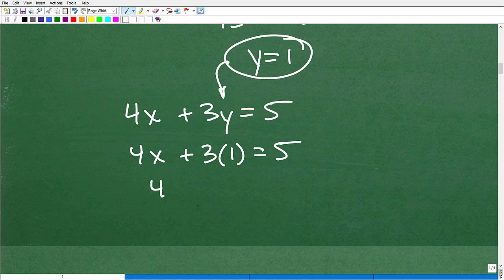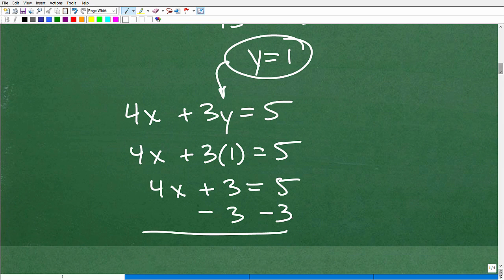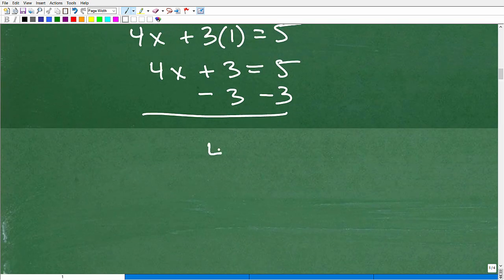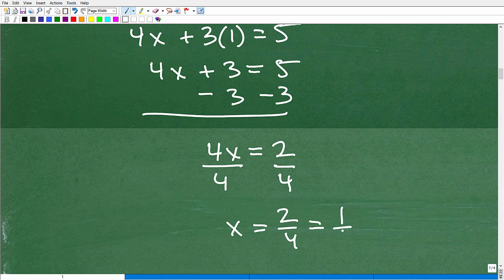So 4X plus 3 times 1 equals 5. That's going to be 4X plus 3 is equal to 5. I'm going to subtract 3 from both sides of the equation, and I get 4X is equal to 2. Now I could divide both sides of the equation by 4, and I get X is equal to 2 over 4 or 1 half. So X was 1 half, Y was 1.